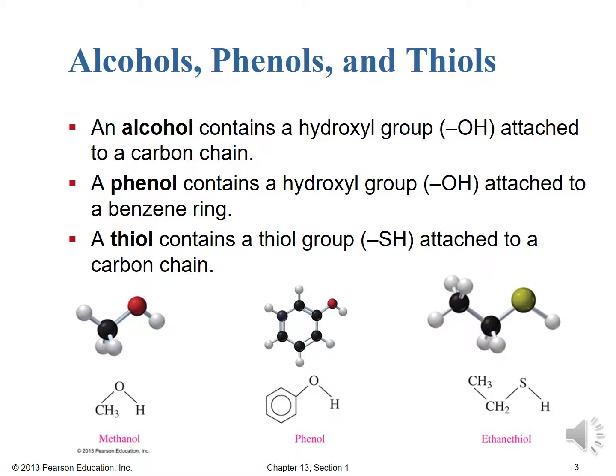We have OH groups for alcohols and OH groups for phenols, and SH groups for thiols. Sulfur is right below oxygen on the periodic table — they're both members of the oxygen family, group 6A or group 16 — so we expect similar chemical behavior. That's the main reason we discuss alcohols, phenols, and thiols together in this first lecture, and then in the next lecture we'll talk about ethers, which involve a COC bond.